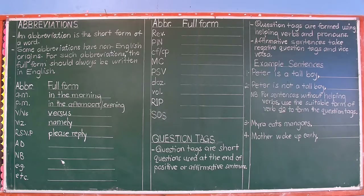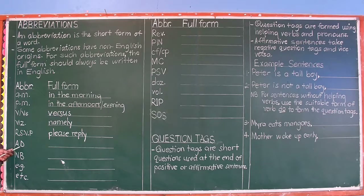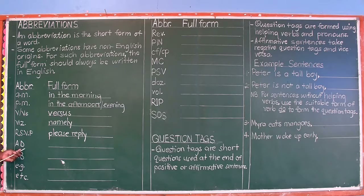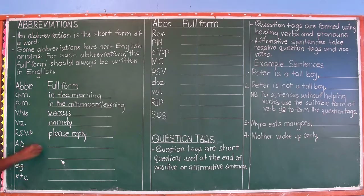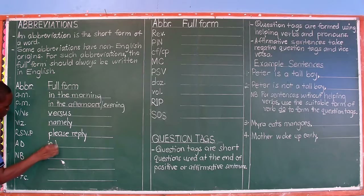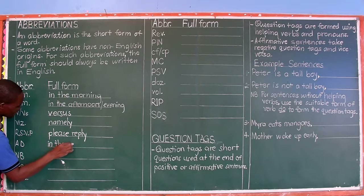Next is AD, originally in Latin, meaning 'anno Domini'. The full form of AD in Latin is 'anno Domini'. Changing it to English, it becomes 'in the year of our Lord'.